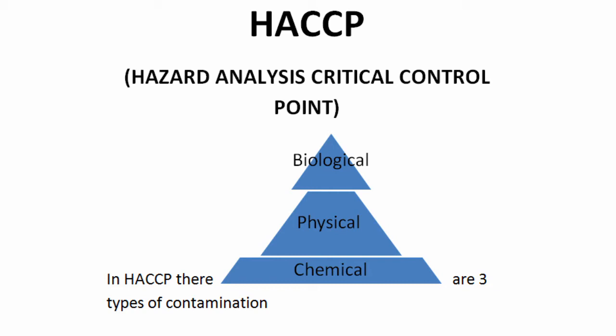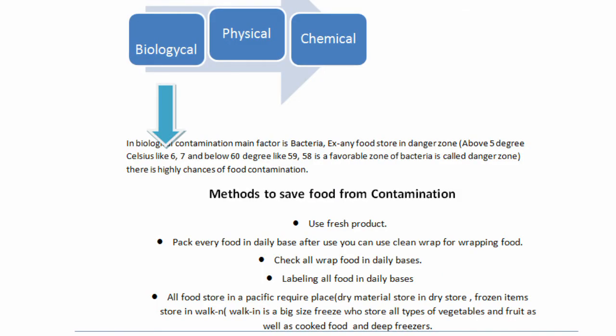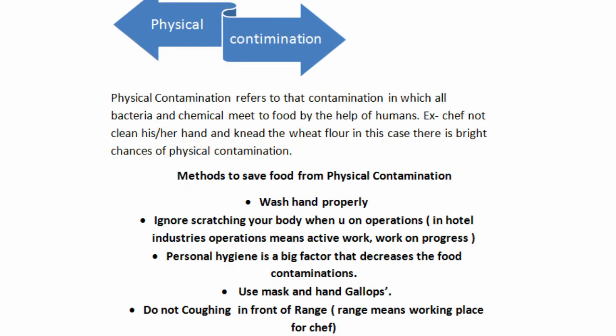First is biological contamination. Biological contamination happens because of bacteria in our atmosphere. There are so many bacteria present but our eyes cannot see them because they are very microscopic. That type of bacteria contaminates food, and this category is known as biological contamination.